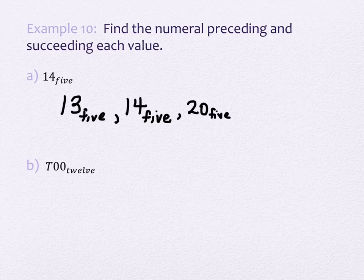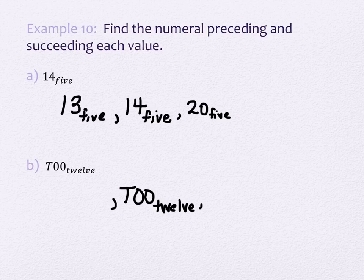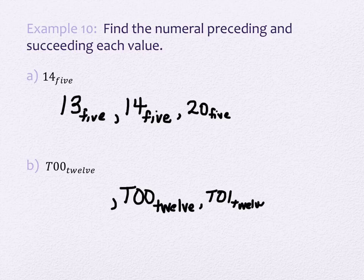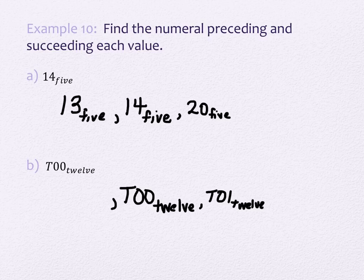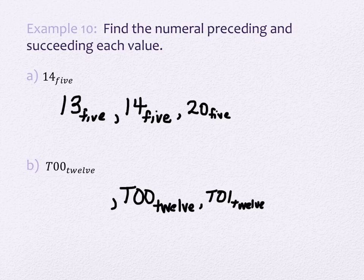T, 0, 0 base 12. The easier one here is what comes after it: T, 0, 1. We just add one more on the end. Adding 1 to 0 is always 1 — it doesn't matter what number system you're in. But when you take 1 away from 0 in any number system, that's tricky. Think about 300 and taking away 1 — it affects every single digit in that number. So your expectation is that when I do the number before T, 0, 0, I'm not going to have a T, a 0, or a 0 — none of these numbers will stay the same.